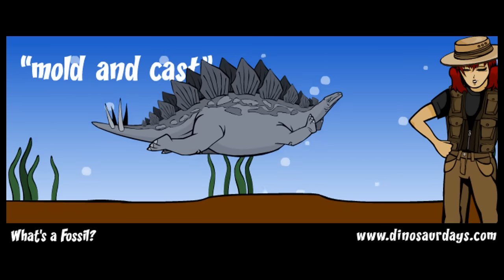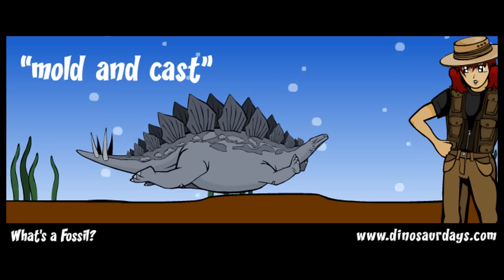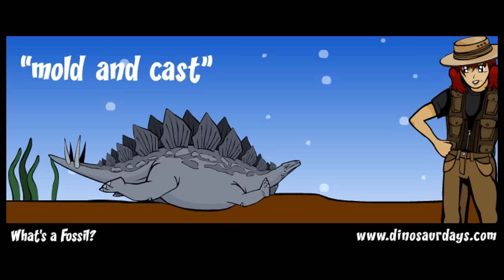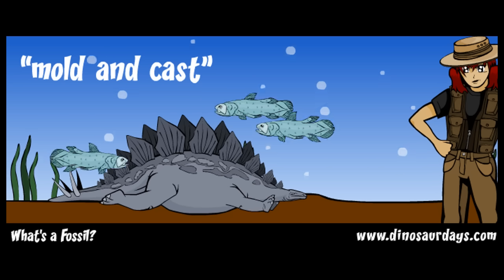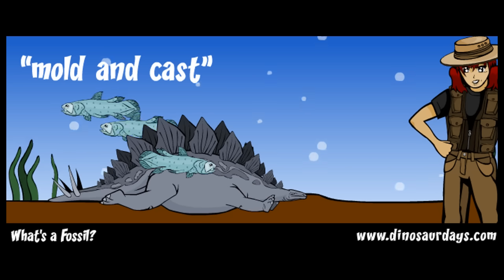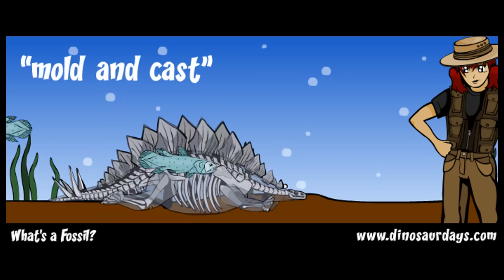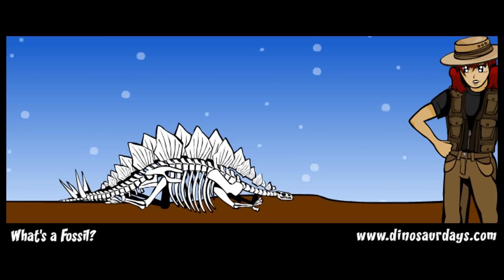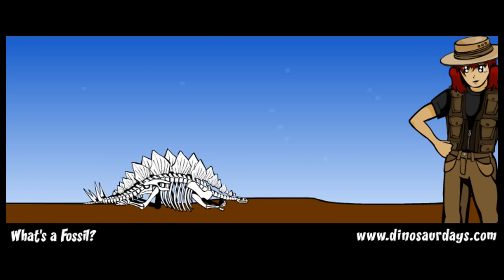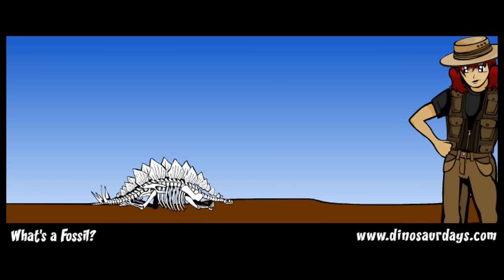Imagine a stegosaurus drowns in a river and its body sinks to the bottom of the riverbed. The flesh of the animal rots away or is eaten by smaller creatures. Eventually, only the bones are left. Mud and sand, called sediment, cover the skeleton over many years.